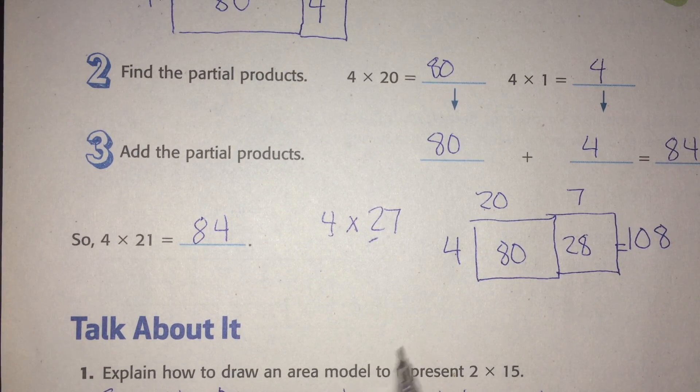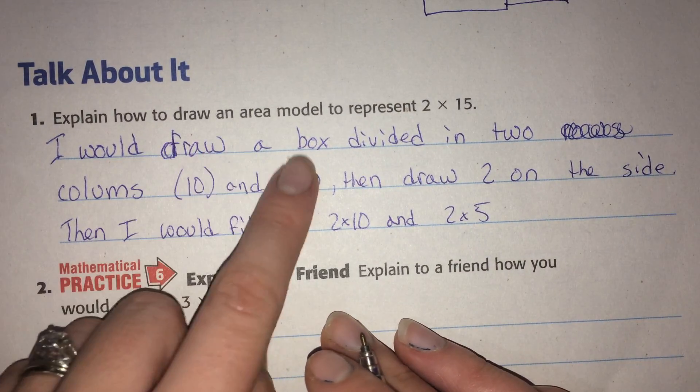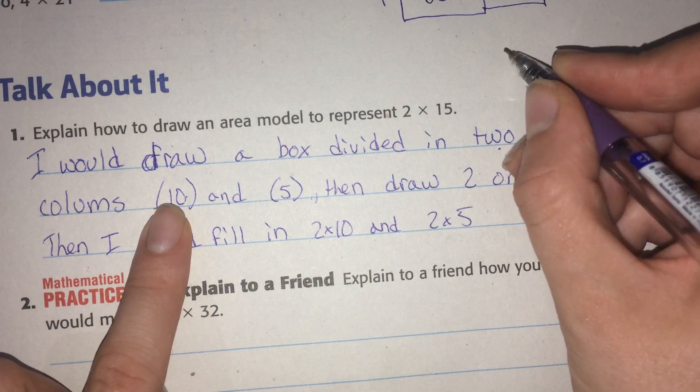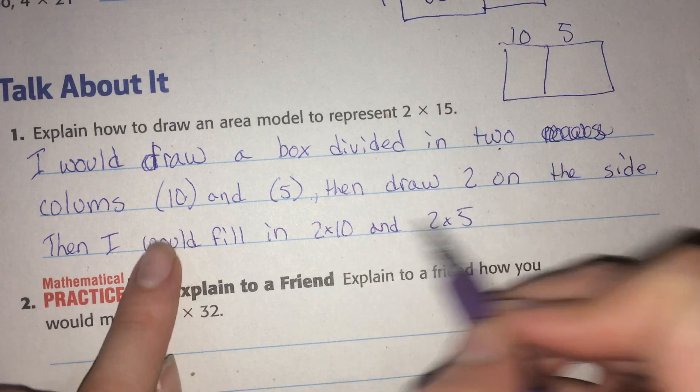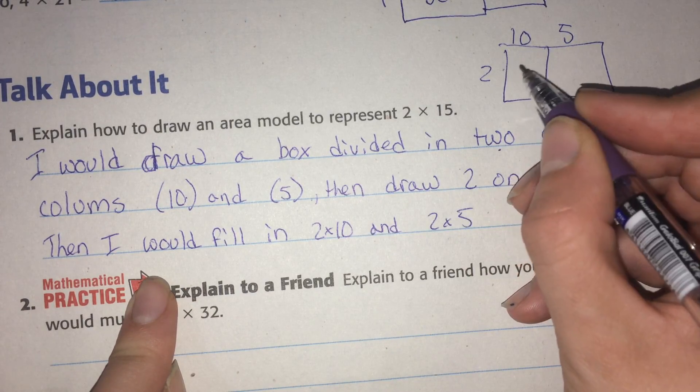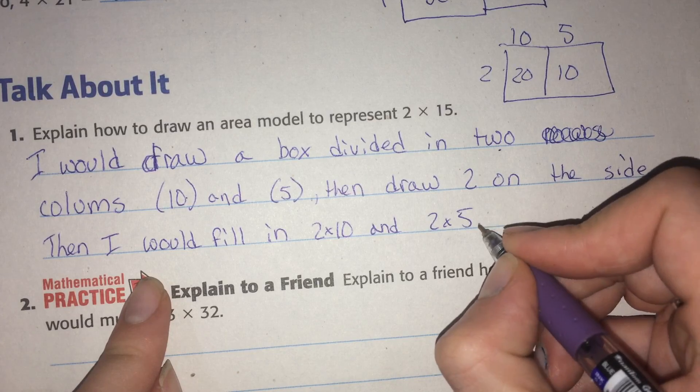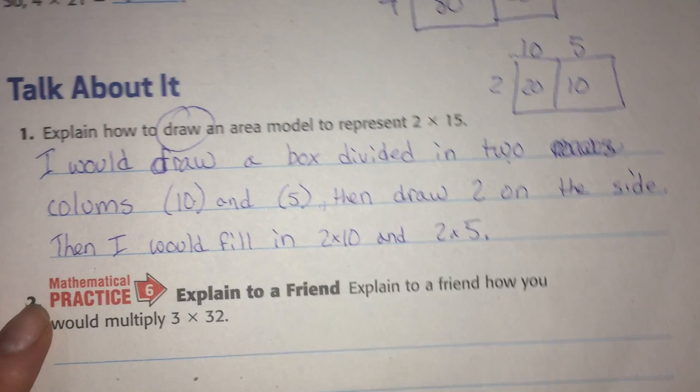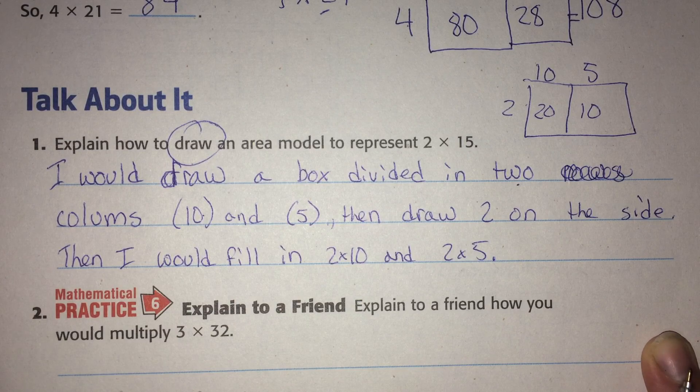Explain how to draw an area model to represent 2 times 15. So this is put it into words. I would draw a box divided into 2 columns for 10 and 5—a box divided into 2 columns for 10 and 5, and then draw 2 on the side. Then I would fill in 2 times 10 and 2 times 5. So that's how you would draw an area model. You can pause it on that screen and write what I have, or you can explain it in your own way.